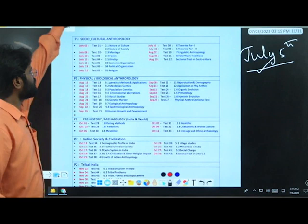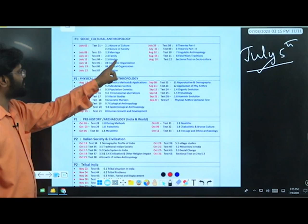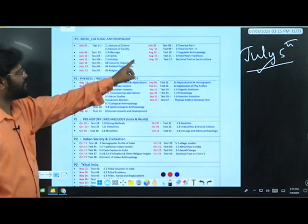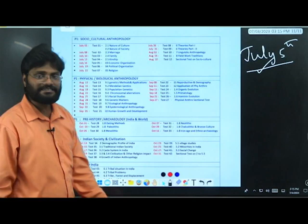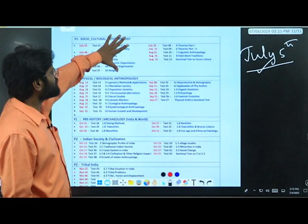From July 5th, you will start with the social cultural anthropology module. You can see here: July 5th test one, July 8 marriage, July 10 family, July 13 kinship, July 16 economic organization, July 19 political organization, July 22 religion, July 26 theories part 1, July 31 theories part 2, August 2nd linguistic anthropology, August 5th fieldwork and relation, and August 10th you would finish entire social cultural anthropology in the form of sectional test.